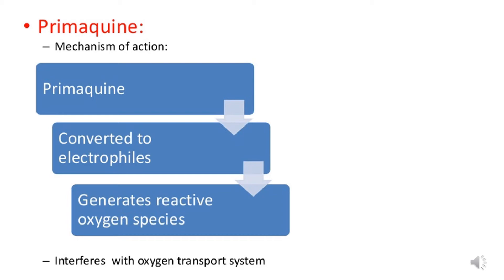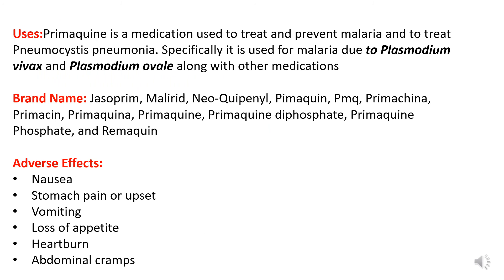Primaquine is converted into an electrophile that generates reactive oxygen species. These oxygen species generate free radicals which interfere with the oxygen transport system in the malarial parasite, stopping its survival. Uses of primaquine: it is used to treat and prevent malaria, to treat Pneumocystis pneumonia, and specifically for malaria caused by Plasmodium vivax and Plasmodium ovale along with other medications. Brand names include Jesoprim, Malarate, Primaquine, PMQ, etc.